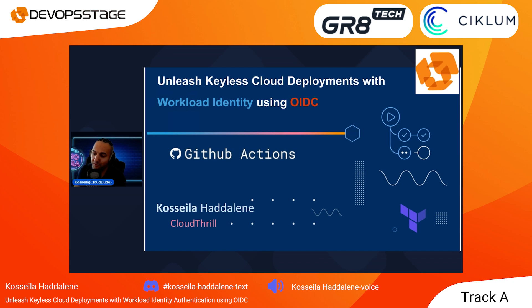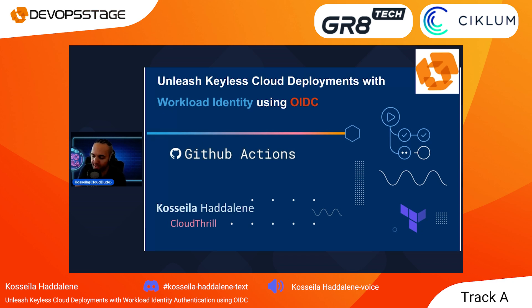Hi, and welcome, everybody. I'm very pleased to be here with you at the DevOps stage. Today, we're going to talk about keyless cloud deployments and GitHub Actions with workload identity using OIDC. Instead of just introducing OIDC like many resources online, I'd rather do more than scratch the surface and rewind back in time to the origin story of the authentication journey and add some context.